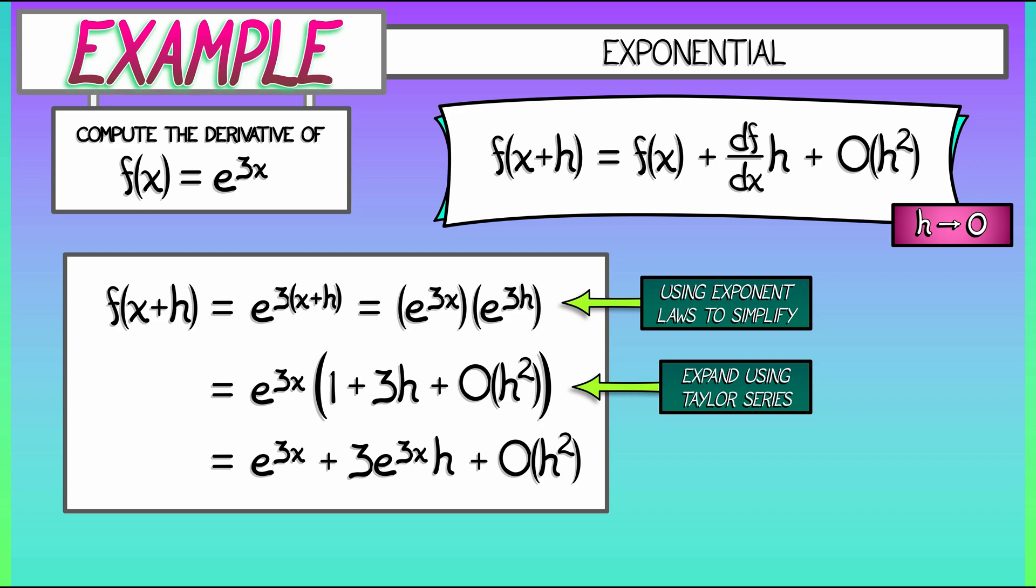Now, you have to be a little careful at this point because we've got x's and we've got h's floating around. Remember, what's the variable here? It's the h. And we're looking at the asymptotics of this in the limit as h goes to 0. So that e to the 3x, that's kind of like a constant. And so it just gets absorbed into that big O of h squared.